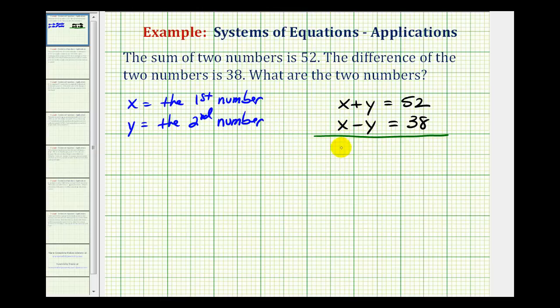X plus x would be two x. Again, the y terms are opposites, so this would be zero. On the right side we have fifty-two plus thirty-eight, which is equal to ninety.